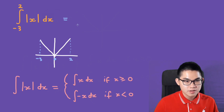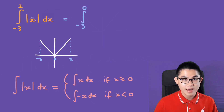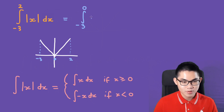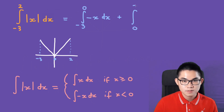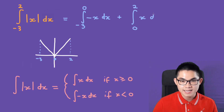So, here we have the integral from negative 3 to 0 of the absolute value of x. And we know that when x is smaller than 0, we have negative x, dx, plus the integral from 0 to positive 2. And the value is going to be positive x, dx.